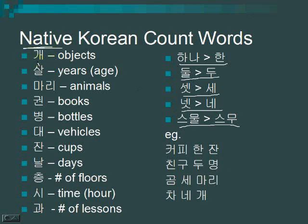Here are the count words that go with native Korean numbers. If you don't know the specific count word — and there are a lot of them — you can just use 개, which is a general counter. It's perfectly fine to use 개, which is why it's listed at the top. You should know that one.